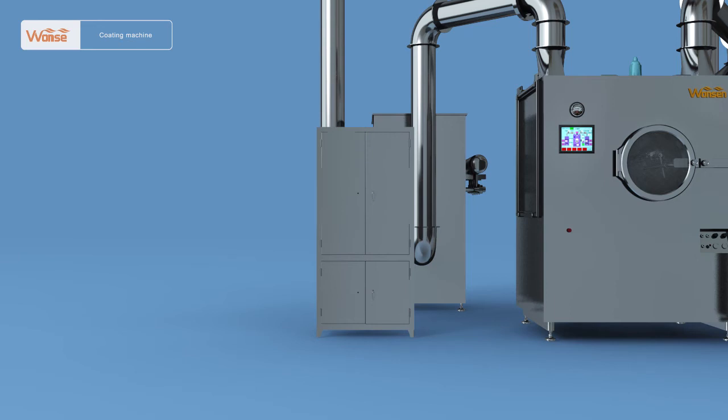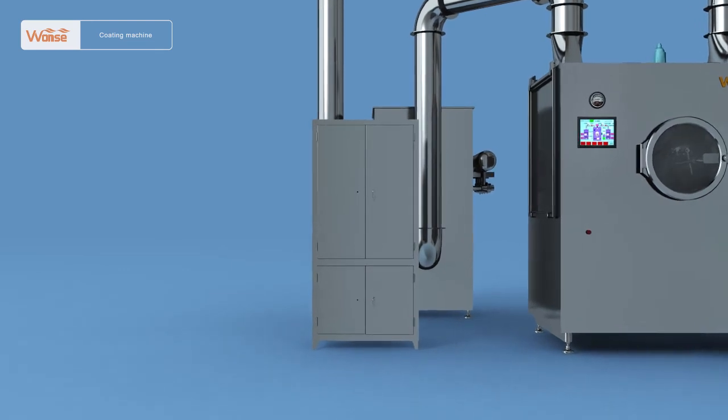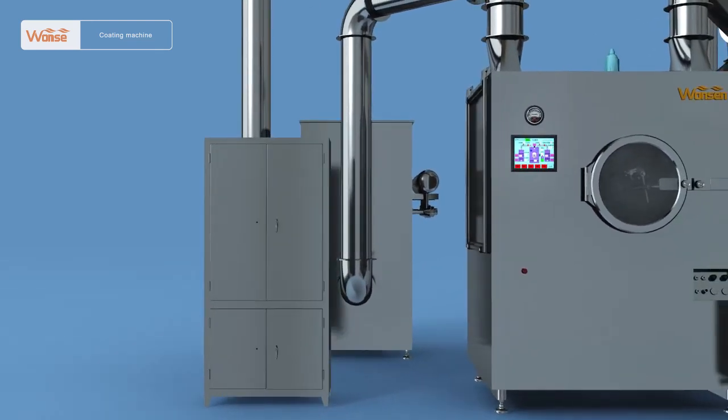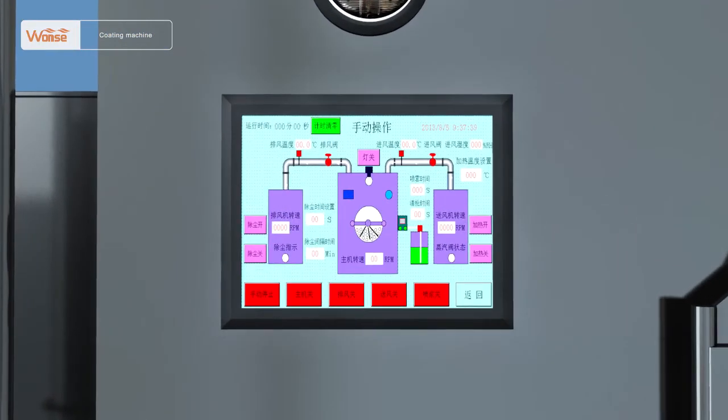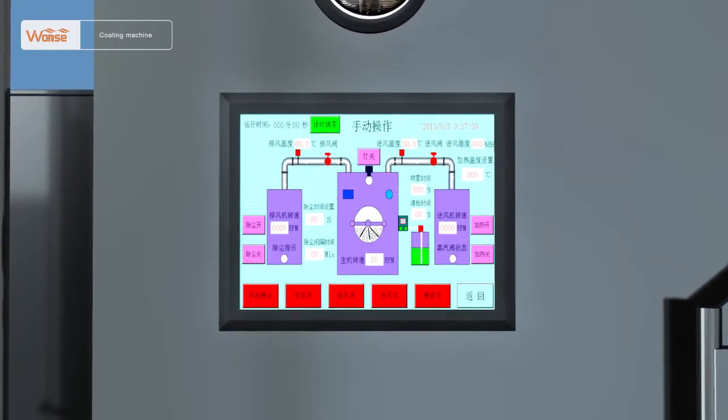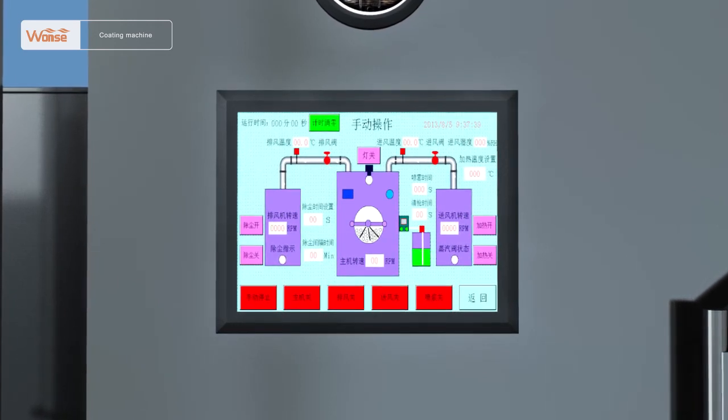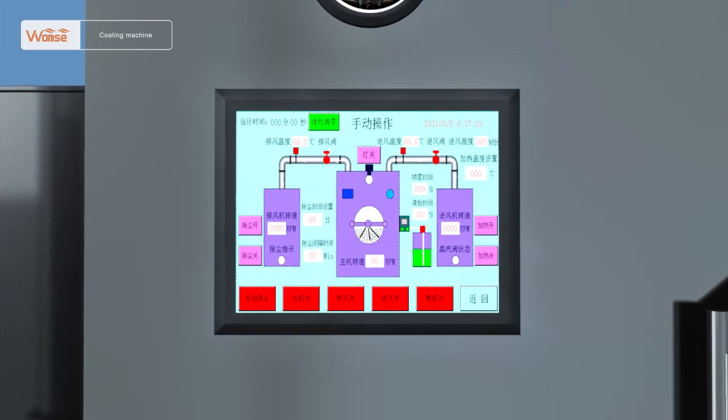The control system is mainly composed of the PLC extension module, frequency converter, host electrical parts, and air control valve. All operations are carried out and displayed on the touchscreen installed in the main machine. A 10.4 inch touchscreen is adopted.